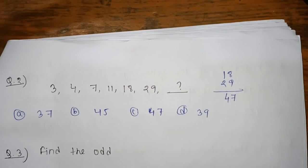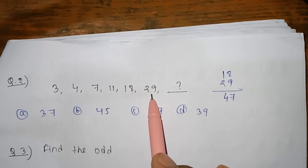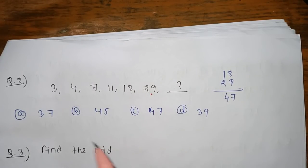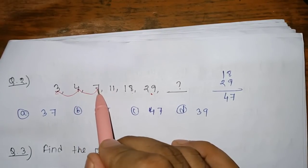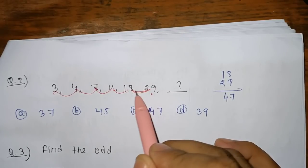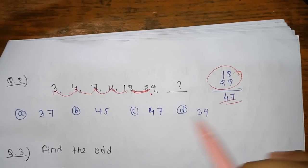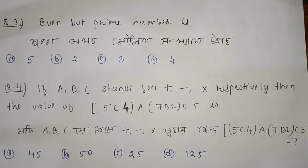The next question is a number series: 3, 4, 7, 11, 18, 29. What comes next? Each number is the sum of the two preceding numbers. The next term follows the same pattern. Option C is the correct answer.